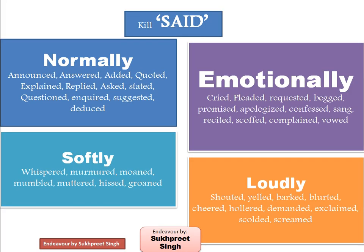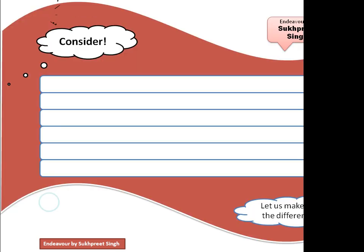Instead of using the word 'said,' which is often overused, we can use other words. For normal usage: announced, answered, added, quoted, explained, replied, asked, stated, questioned, inquired, suggested, deduced. Emotionally: cried, pleaded, requested, promised, apologized, confessed, scoffed, complained, vowed. Softly: whispered, murmured, moaned, mumbled, muttered, hissed, groaned. Loudly: shouted, yelled, barked, blurted, cheered, hollered, demanded, exclaimed, scolded, screamed.